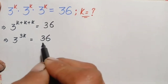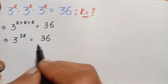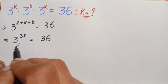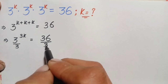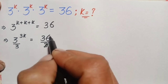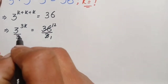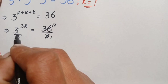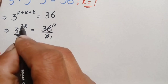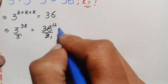Since 3 and 36 are both divisible by 3, we divide both sides by 3. On the right hand side, 36 divided by 3 is 12. On the left hand side, since the power of the divisor is 1, we will use the exponential identity: a raised to power m divided by a raised to power n.